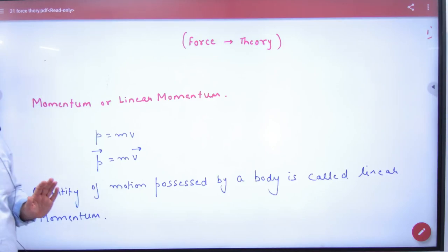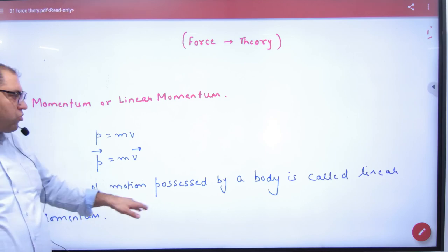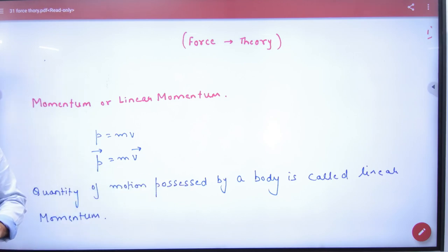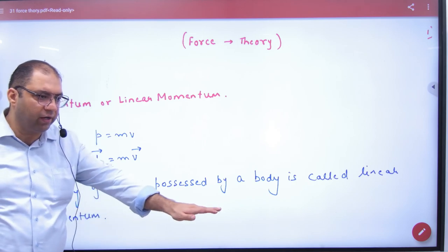First of all, what is momentum or linear momentum? Everyone knows that momentum is the amount of motion possessed by a body. It is called linear momentum because the body is moving in a straight line.